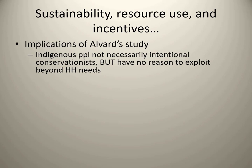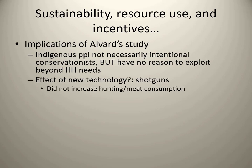Even with the introduction of shotguns, which potentially could have allowed for more efficient hunting, the Piro did not increase hunting or meat consumption, even though they technically could have. Whether blowguns, bow and arrows, or shotguns — it didn't make them eat more or hunt more. New technology didn't necessarily change things.